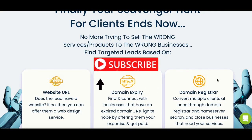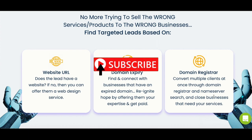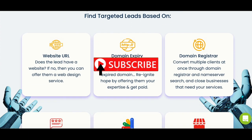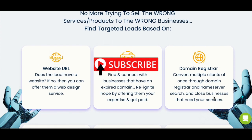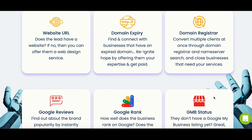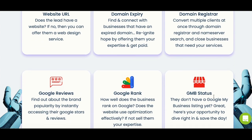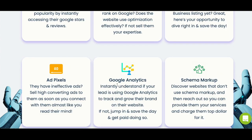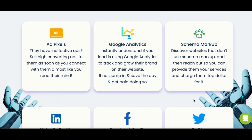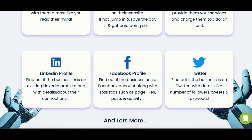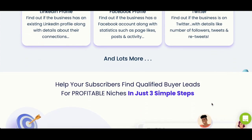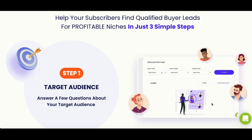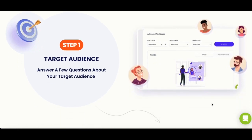No more trying to sell the wrong products or services to the wrong businesses. You can find targeted leads based on their website, their domain expiry, the domain registrar, Google reviews, Google rank, ad pixels, Google Analytics, schema markup, their LinkedIn profile, Facebook profile, Twitter, and many more. And this can be done in just three simple steps.